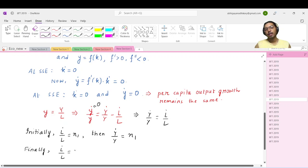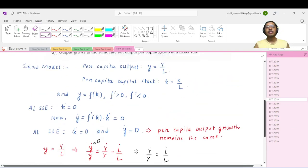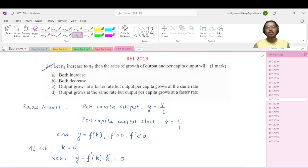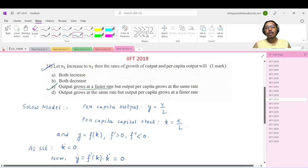Capital Y dot by Y becomes n2. As it is given that n2 is greater than n1, the new growth in the final output is higher - that means it grows at a faster rate. So if you look at the options, it is option number C: output grows at a faster rate, but output per capita grows at the same rate, because small y dot is zero.